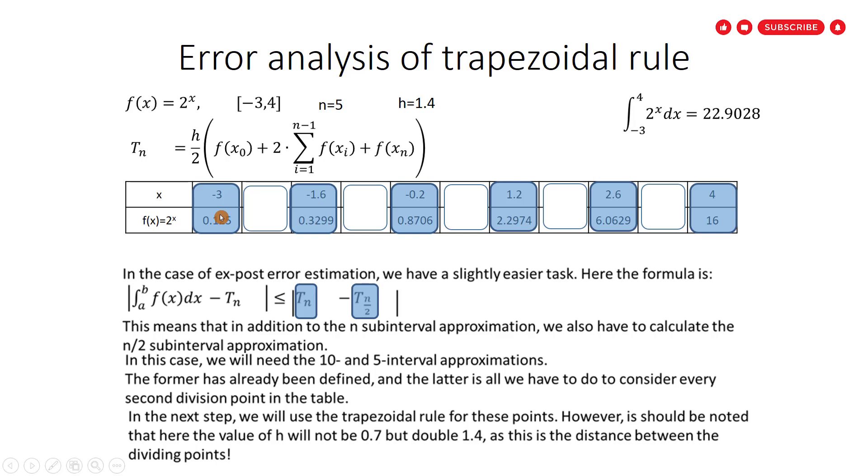We see we have 5 subintervals. This division point, we have 6 division points and 5 subintervals: 1, 2, 3, 4, 5. We see that x goes from minus 3 to minus 1.6. The distance between these two division points is 1.4. And also, the distance between the other two division points, minus 1.6 to minus 0.2, is 1.4, and so on.